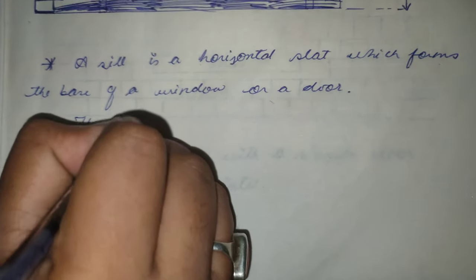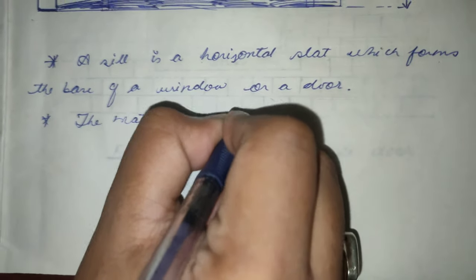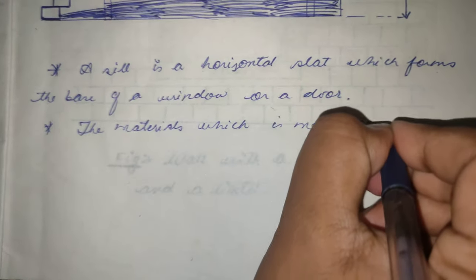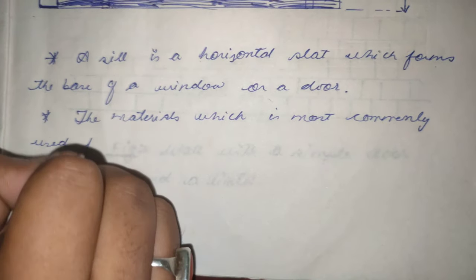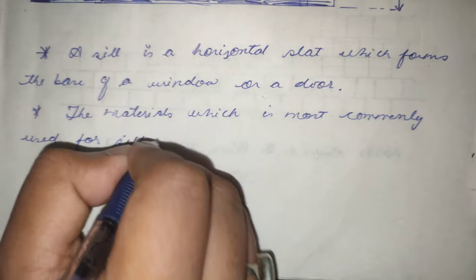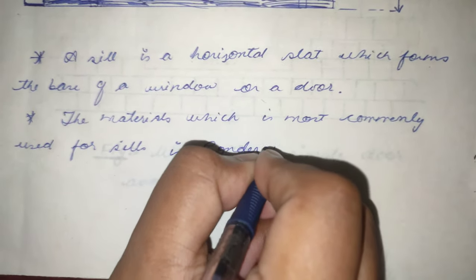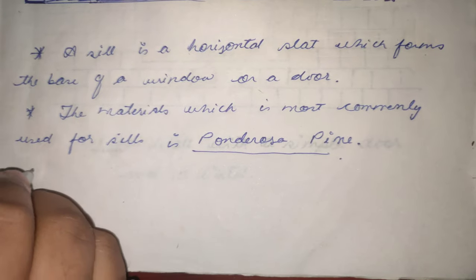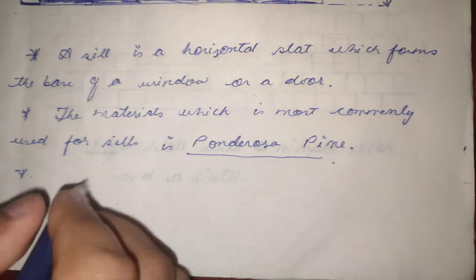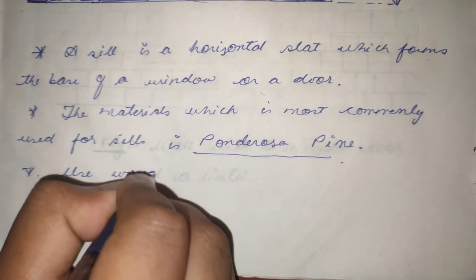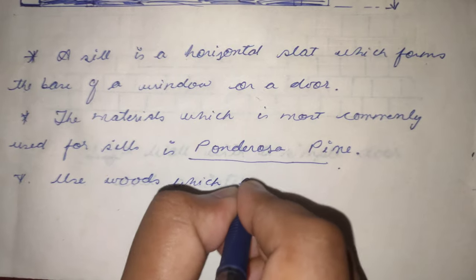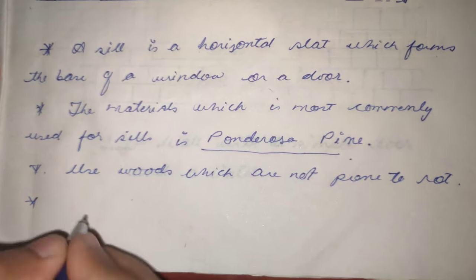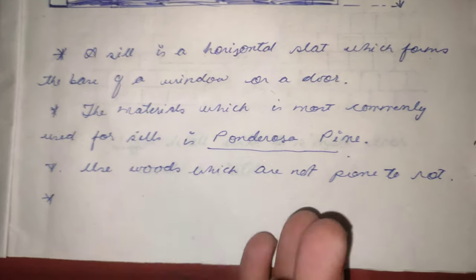The materials which will be used for sills is Ponderosa Pine. And we should use woods which are not prone to rot, and also we should use water resistant and more decay resistant woods.